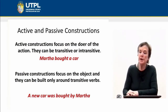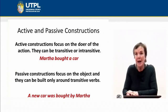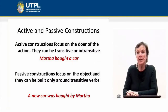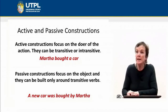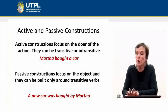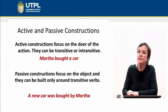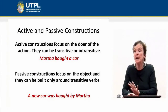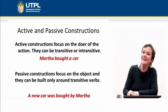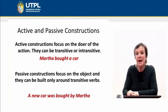Another division of construction is known as active and passive. Active constructions focus on the doer of the action — the entity that performs an action. Active constructions are built around transitive or intransitive verbs. If I say 'Marta bought a car,' here I have a transitive construction because the verb 'buy' is transitive. How do you know that the verb is transitive? Because all transitive verbs take a direct object.